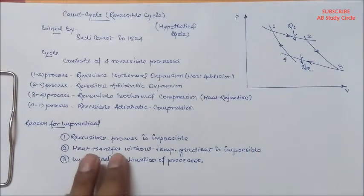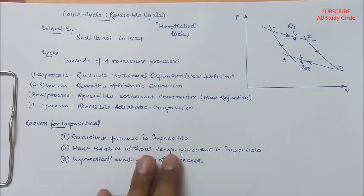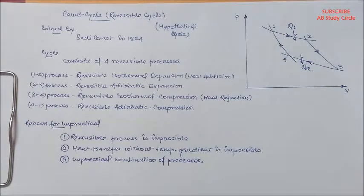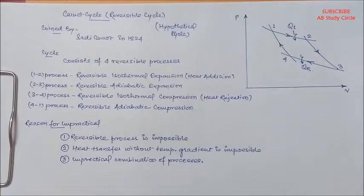The second point is heat transfer without temperature gradient is impossible. In this cycle, what we are doing is that we are transferring heat without temperature gradient. But what is heat transfer? It is the energy transfer due to temperature difference, so it is impossible.